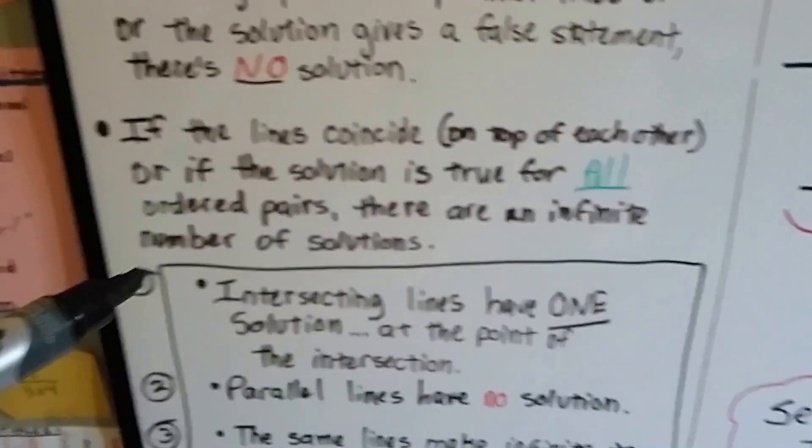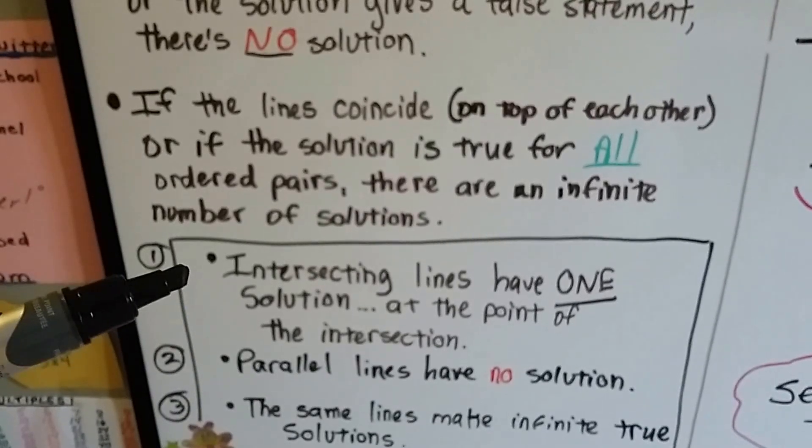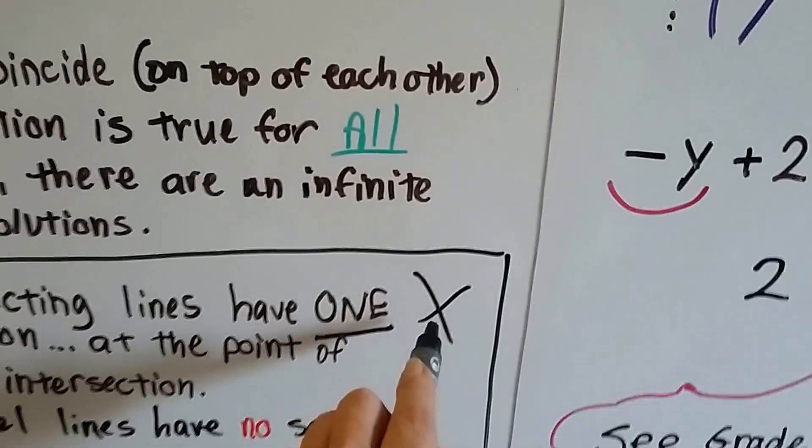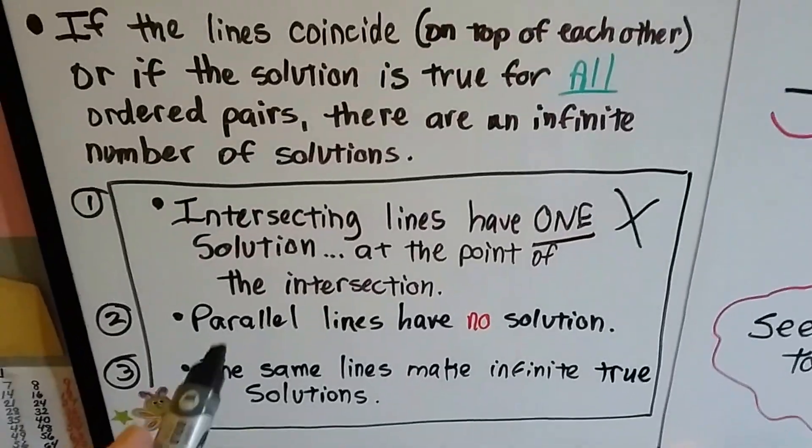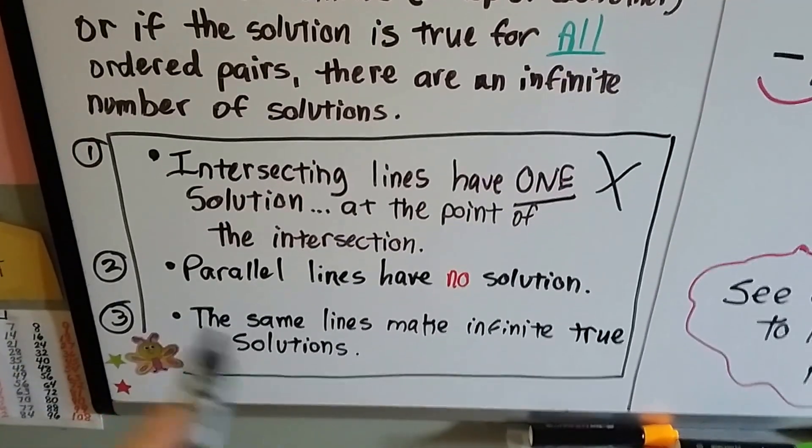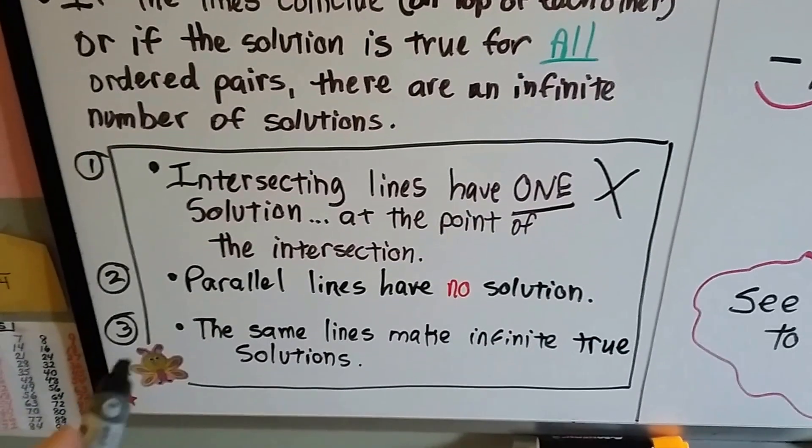And the three things I want you to remember are, intersecting lines have one solution at the point of intersection where they cross. Right where they cross, that's the ordered pair, that's our solution. Parallel lines have no solution because they don't cross. And the same lines, lines that are on top of each other, make an infinite number of true solutions.